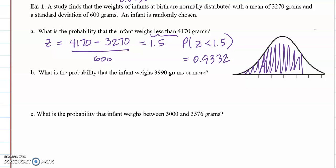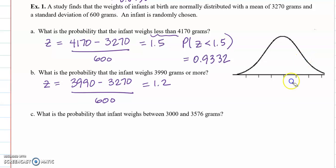Part b what is the probability that the infant weighs 3,990 grams or more? Find that z score first. This time we want or more. So that is this probability which will be 1 minus the probability that z is less than 1.2.